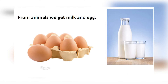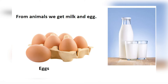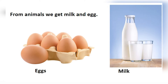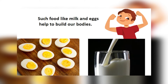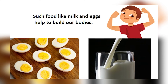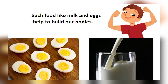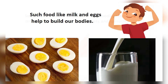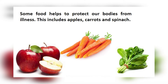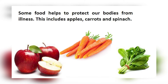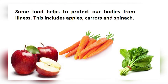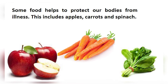From animals, we get milk and eggs. Such foods like milk and eggs help to build our bodies. Some food helps to protect our bodies from illness — this includes apples, carrots, and spinach.